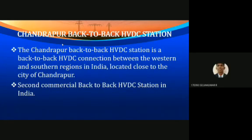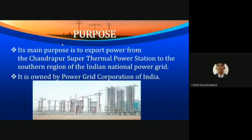The second back-to-back system is the Chandrapur back-to-back HVDC station. It is a back-to-back HVDC connection between the western and southern regions in India, located close to the city of Chandrapur. It is the second commercial back-to-back HVDC station in India. The main purpose is to export power from the Chandrapur Super Thermal Power Station to the southern region of the Indian national power grid.